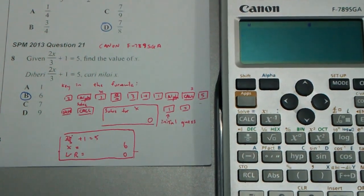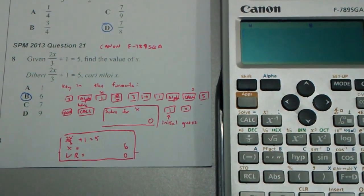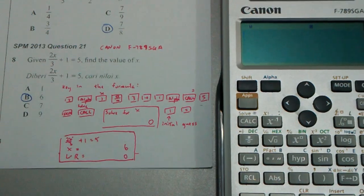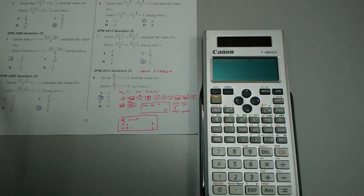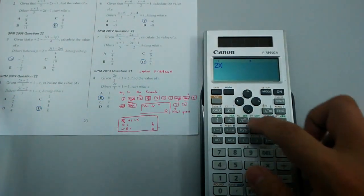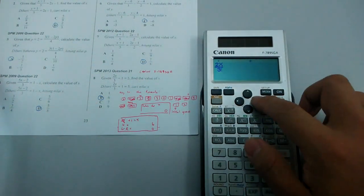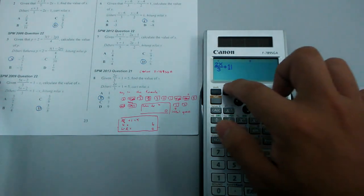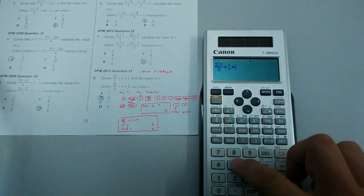First, I key in the formula into the calculator. I have 2 alpha x over 3 plus 1 alpha equal 5.